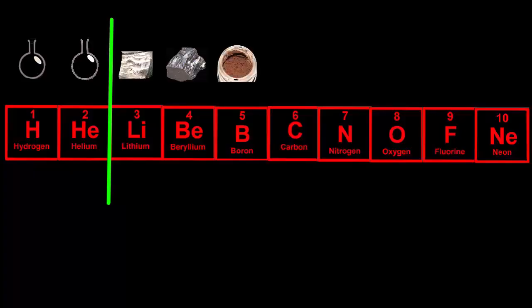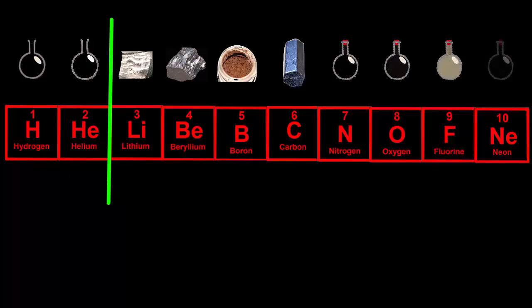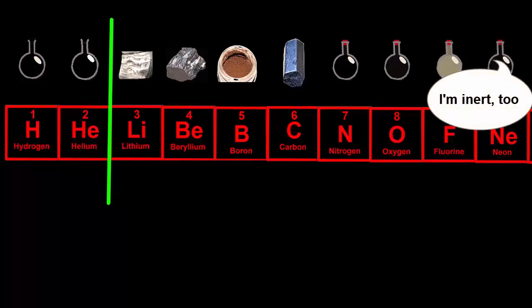Then further to the right, the elements become non-metals, often gases, until we reach neon, a colorless gas that is chemically unreactive or inert like helium.